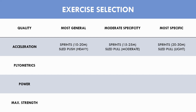For plyometric exercises, we have weighted depth jumps as the most general exercise since they will have the slowest ground contact times, pogo hops as a moderately specific exercise, and bounds as the most specific exercise as they are unilateral and involve very short contact times.